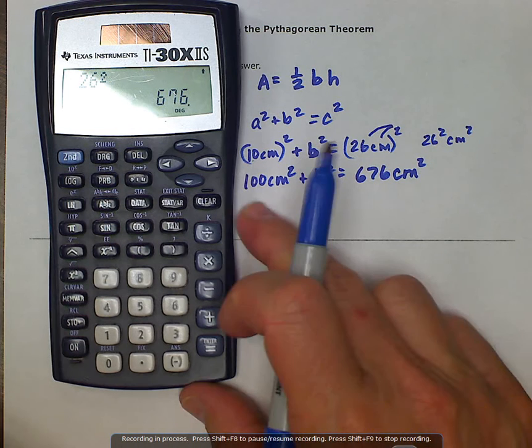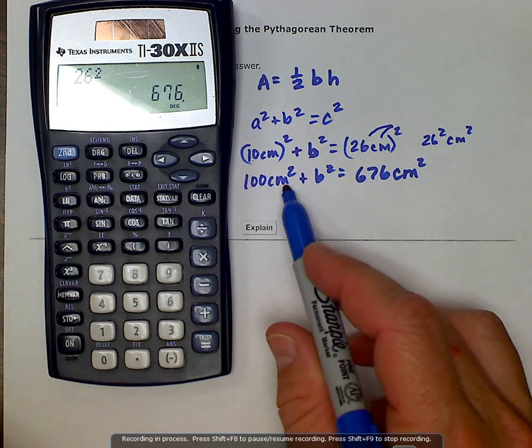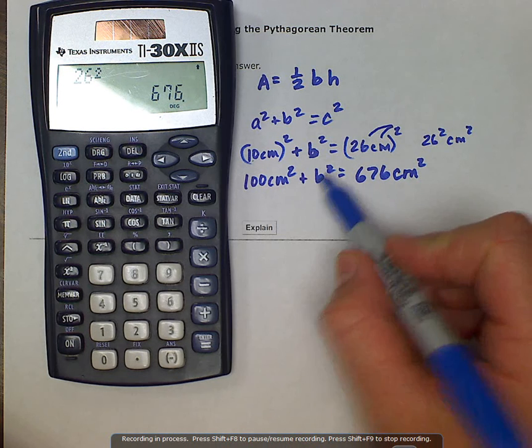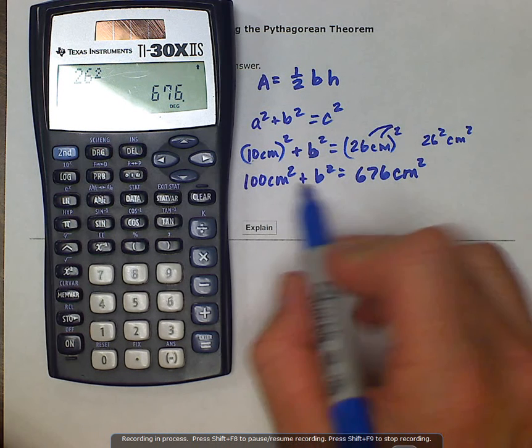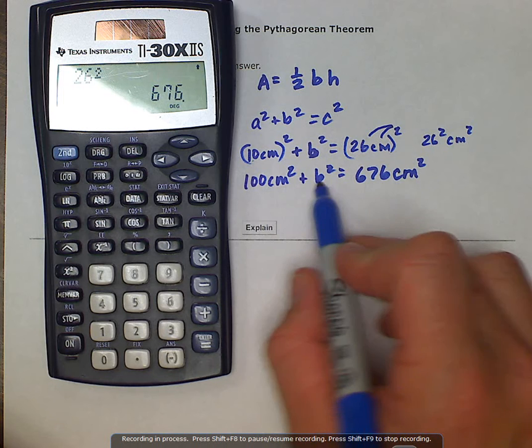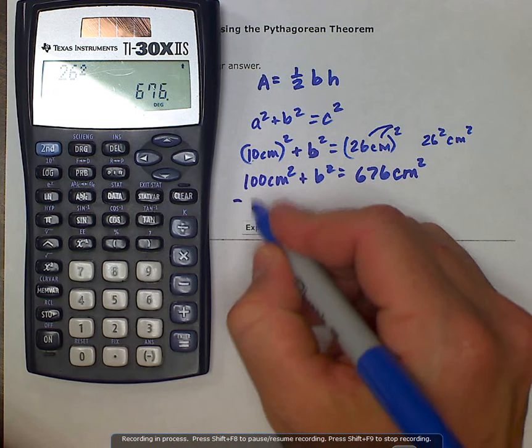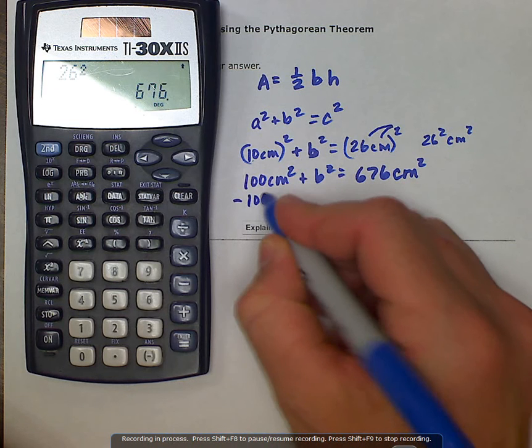Okay, so we have 100 centimeters squared on this side, 676 centimeters squared on this side, and then a b squared. We have simplified both sides. None of these are like terms here, so we're going to go ahead and use opposite operations to isolate for b. Let's subtract 100 centimeters squared.